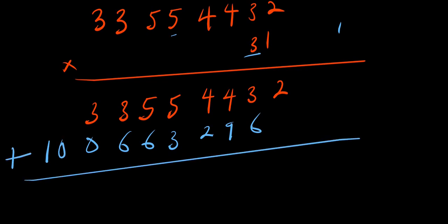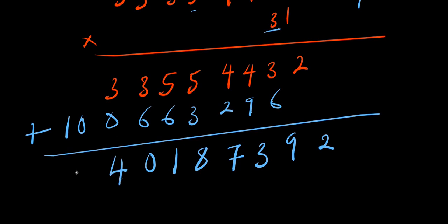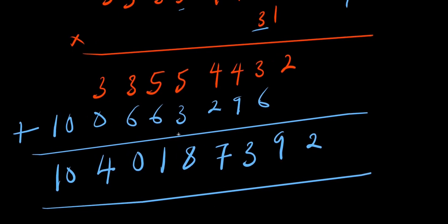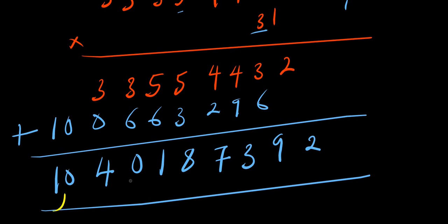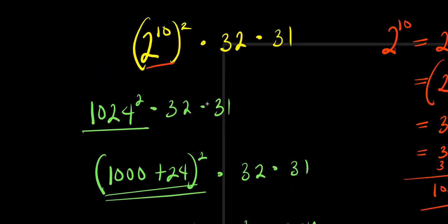As simple as that, we're done. The final answer is 1 billion, 40 million, 187,392 — that is 1,040,187,392. And we have achieved this without the use of a calculator.